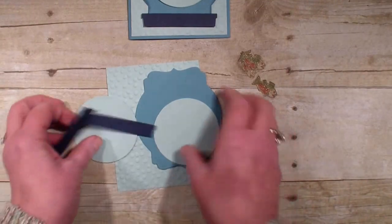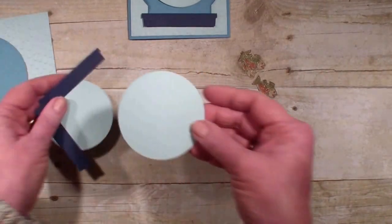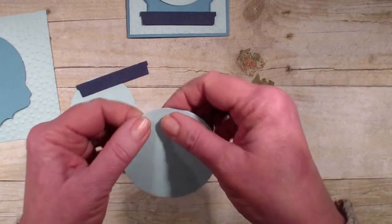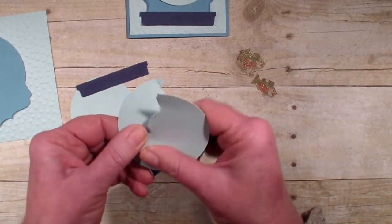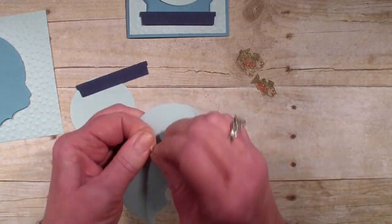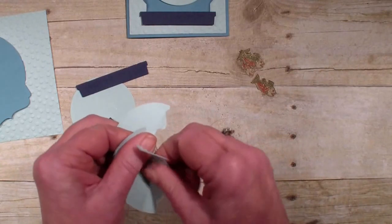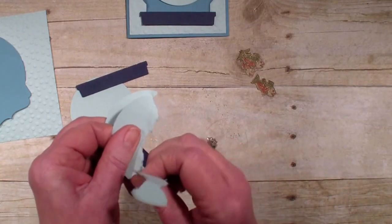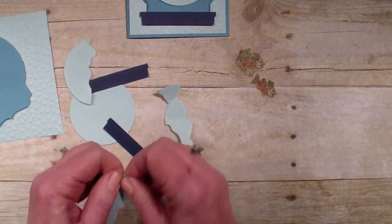Let me show you how I did the water. I simply took one of the circles and I ripped it. There's no rhyme or reason how you rip, but I want to rip three times.